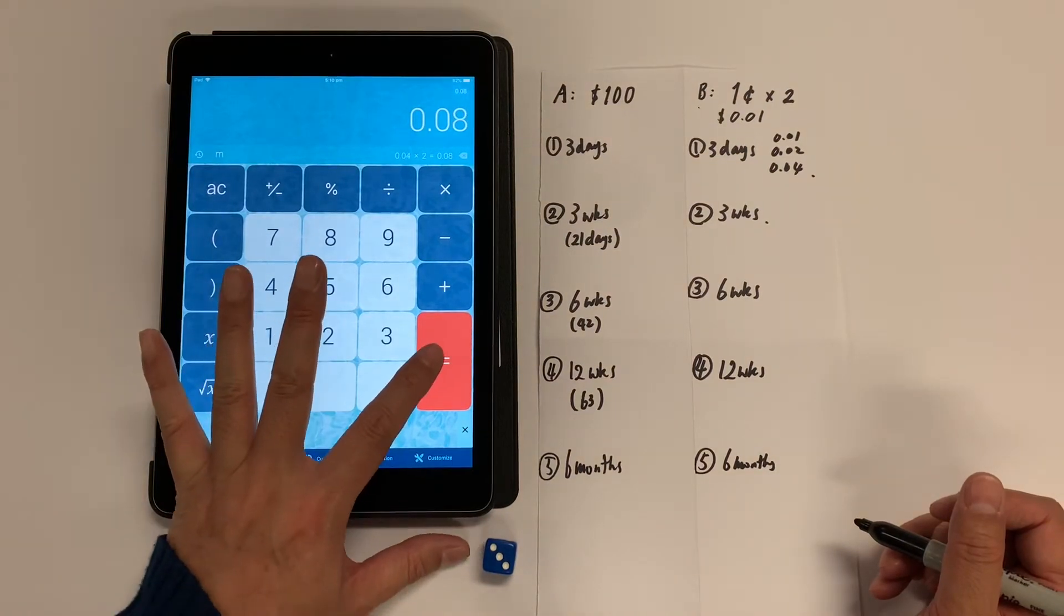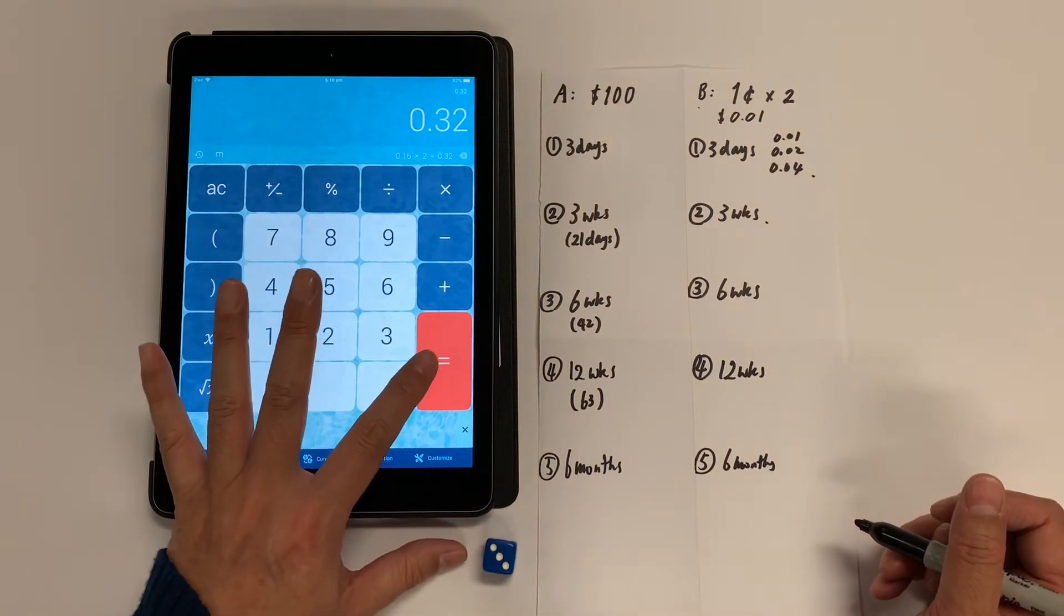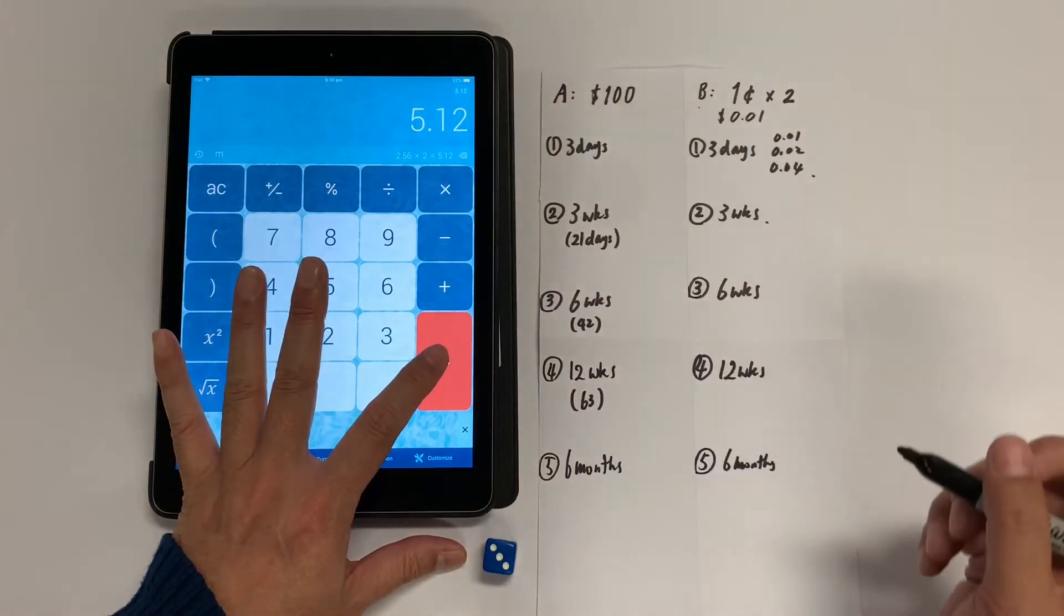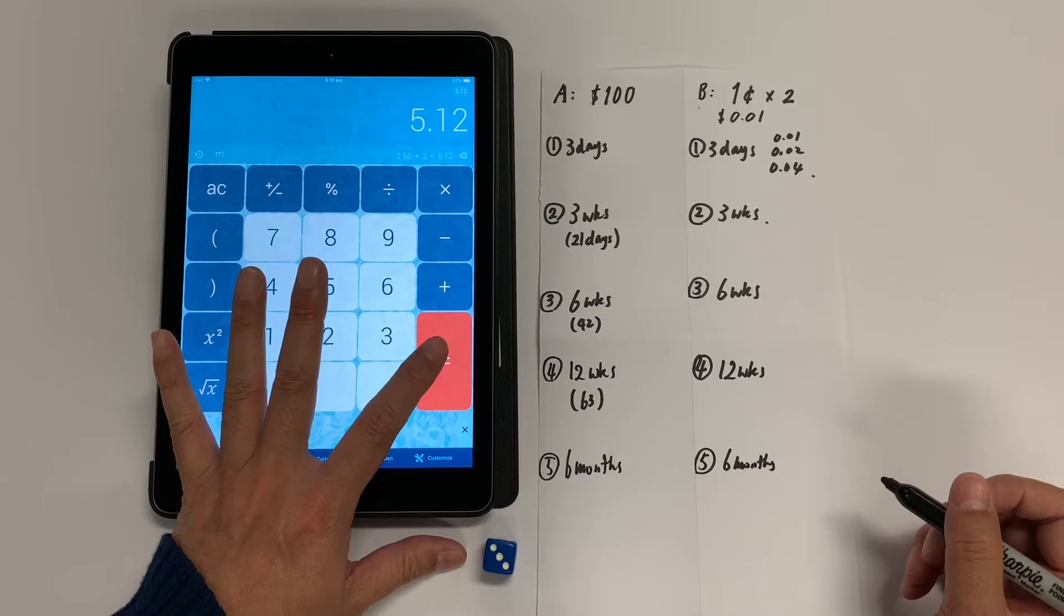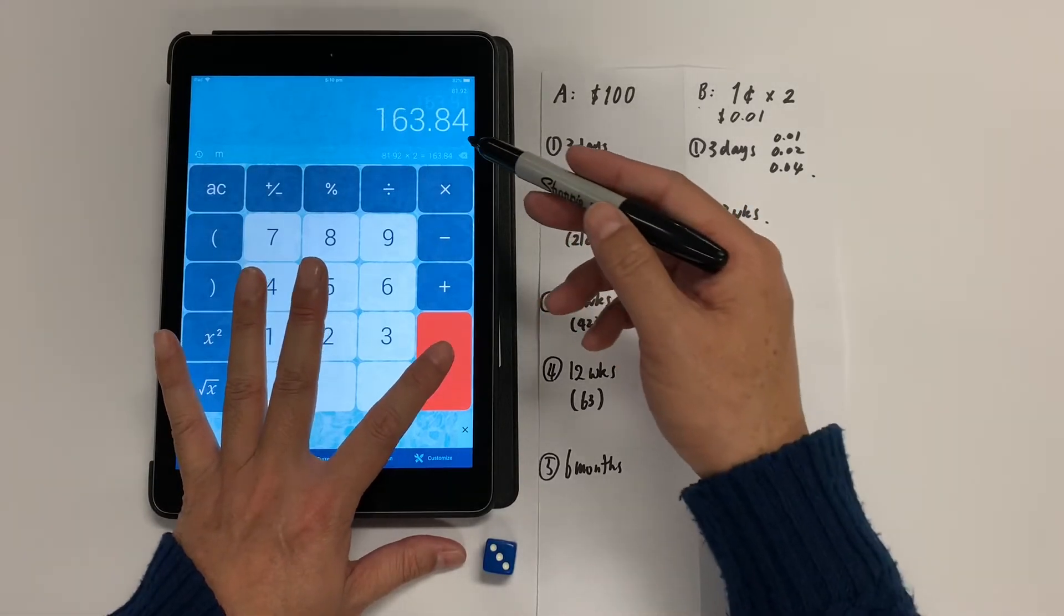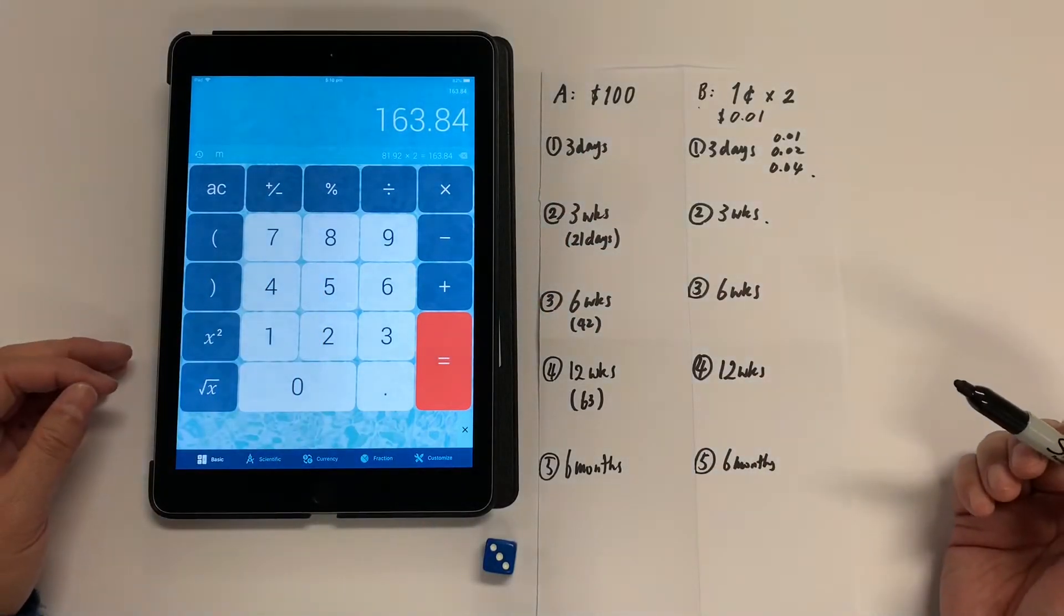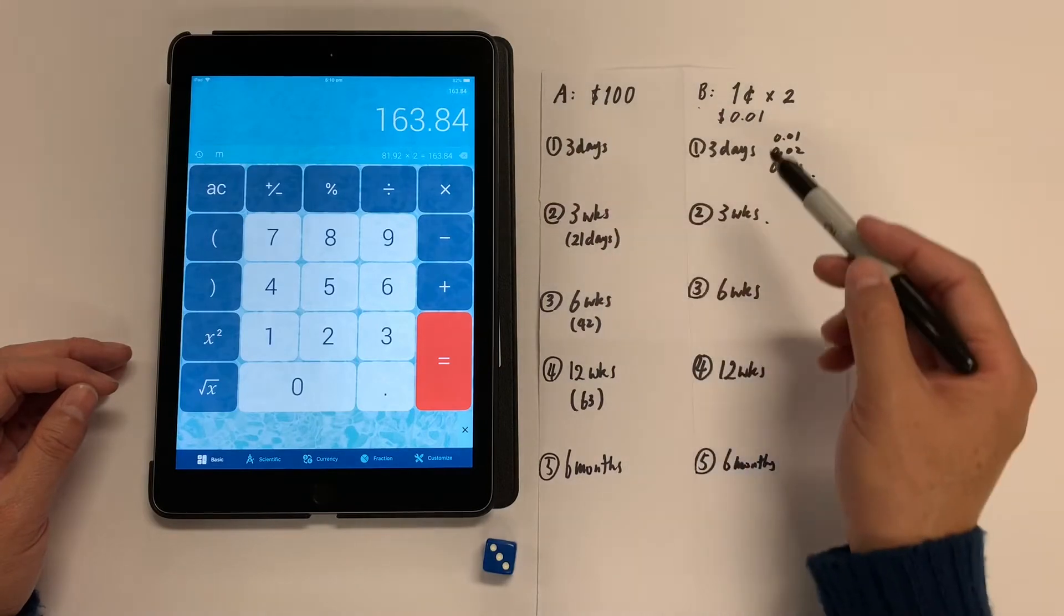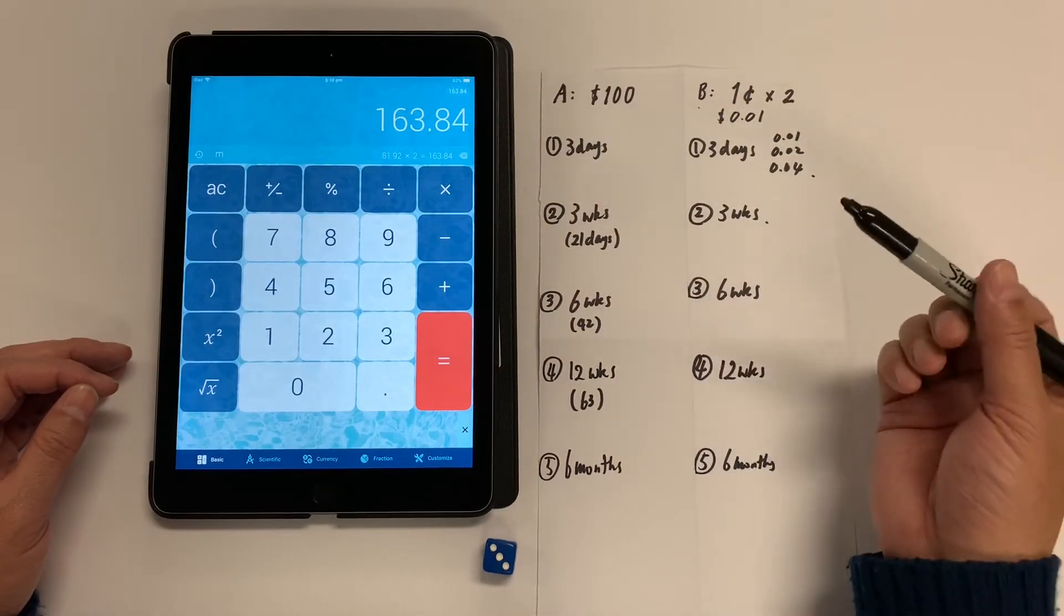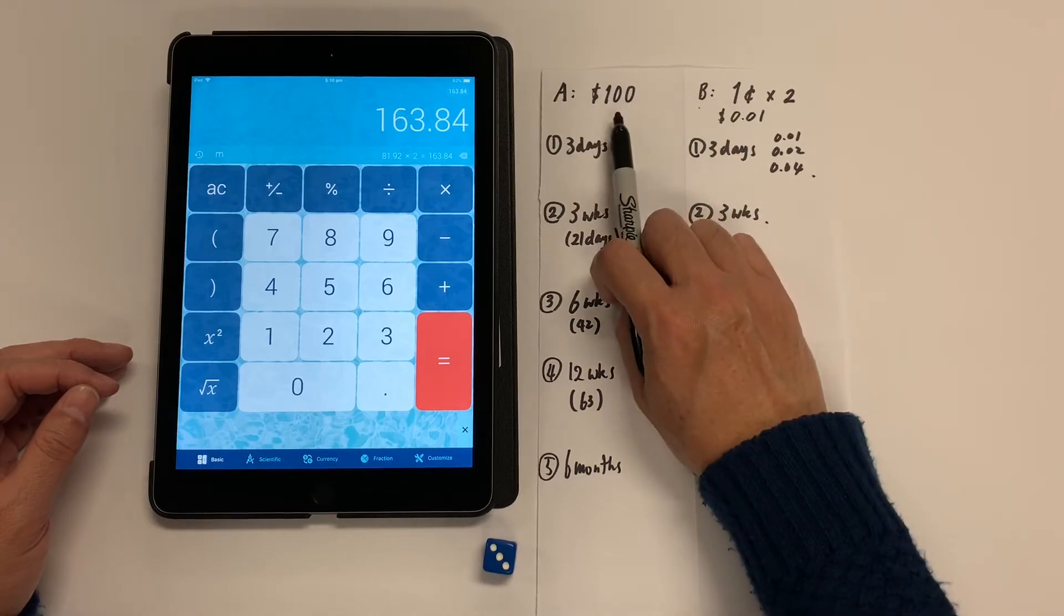Four, five, six, seven, eight, nine, ten days. He's receiving about $5. 11, 12, 13, 14, 15 days. He's already gone over. So he doesn't even need 21 days. It's only 15 days to go over 100.